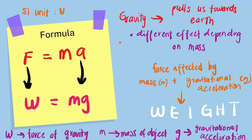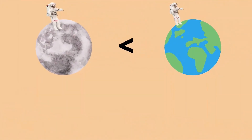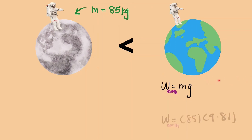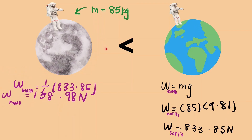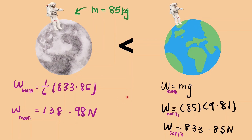Since weight is a gravitational force, our weight would be different on another planet or in space. Let's compare the weight of an astronaut with a mass of 85 kilograms on Earth and on the Moon. Using W equals to mg, his weight on Earth is 833.85 newtons. However, the Moon's gravitational field strength is only one-sixth of Earth's, so the astronaut's weight on the Moon is only 138.98 newtons. Therefore, the astronaut would feel much lighter on the Moon compared to on Earth.